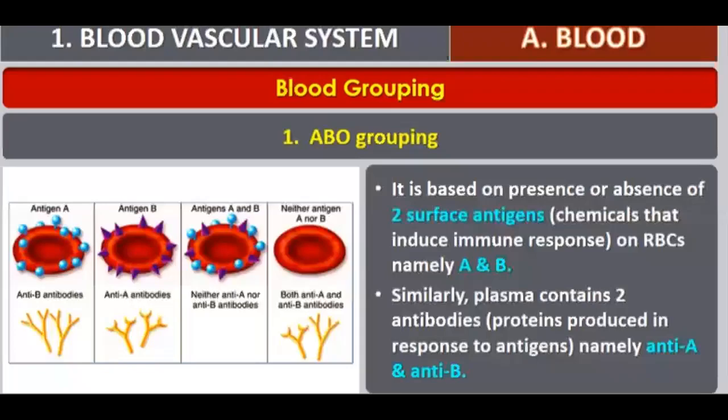Hello students. We were continuing with the blood group system. In the blood group system, we saw that there are two surface antigens present. Antigens are the chemicals that induce immune response on RBCs and they are present on the surface of RBCs. In blood group A, there are A antigens present, and in blood group B, there are B antigens present.